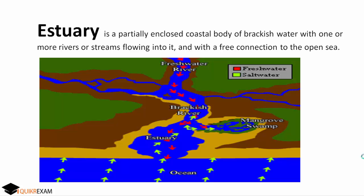Next, what is an Estuary? It is a partially enclosed coastal body of brackish water with one or more rivers or streams flowing into it and with a free connection to the open sea. Freshwater from the river, shown by red arrows, mixes with ocean water, shown by yellow arrows, at some point, resulting in brackish water forming an estuary — especially on high tides, when more ocean water mixes with the river water.